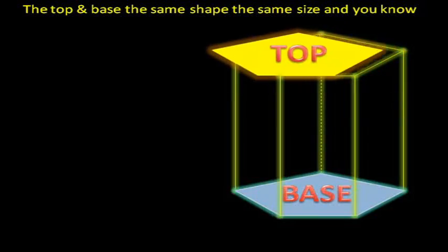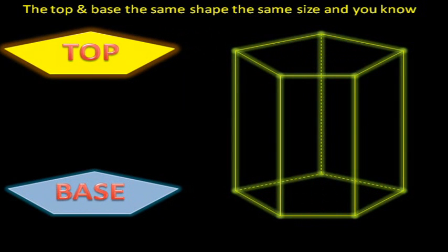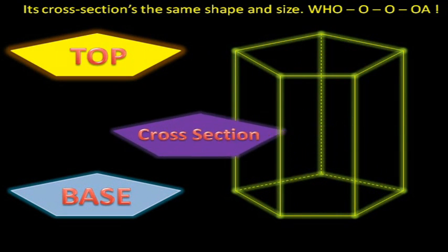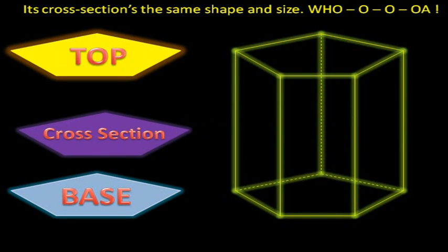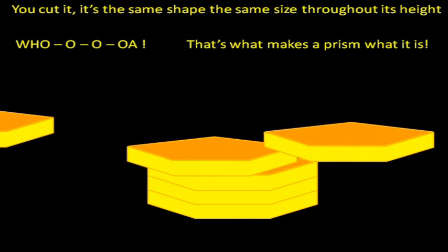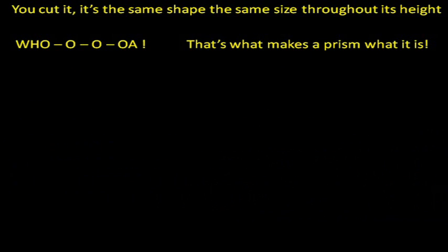The top one makes the same shape, the same size. And you know your cross-section's the same shape and size. Whoa, you cut it, it's the same shape, the same size throughout its heart. Whoa, that's what makes a prism what it is.